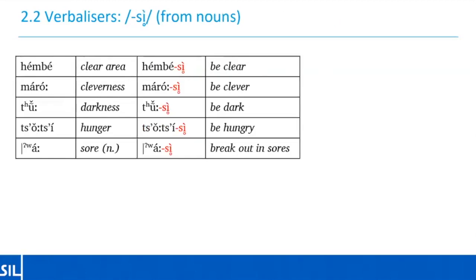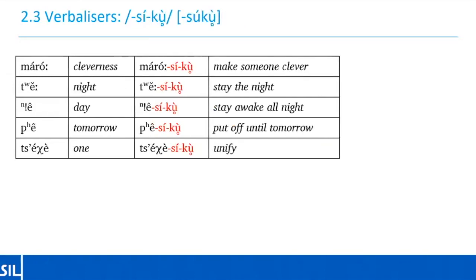Another productive verbalizer is the suffix 'si', which derives verbs from nouns as shown in the table. In most cases the derived verb describes the quality expressed in the abstract nouns — something like cleverness and clever, or darkness and dark. But other meanings are possible, like the example of the noun saw and then the verb to break out in sores.